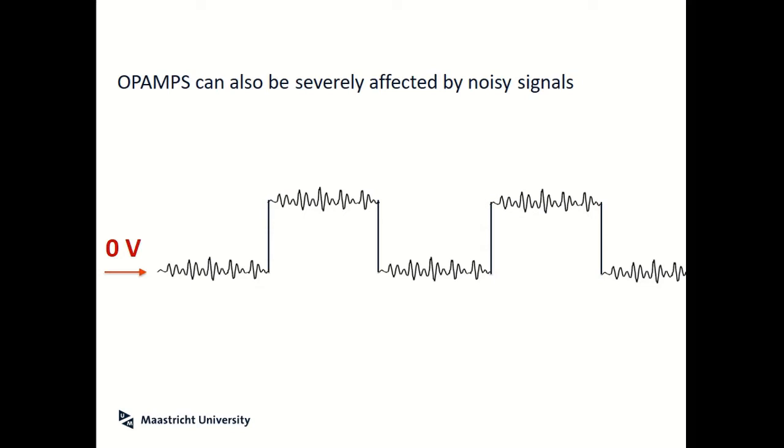The other problem with op-amps is that they can be severely affected by noise. So if there's noise around zero volts in this case that you can see on this sketch, or if the noise means that it's very difficult for it to tell the difference between the two inputs, then the output signal will jump around as a consequence of that noise. There is something we can do about that. And basically we can build a circuit which we call a Schmidt trigger, but I'm not going to cover that in this particular course.